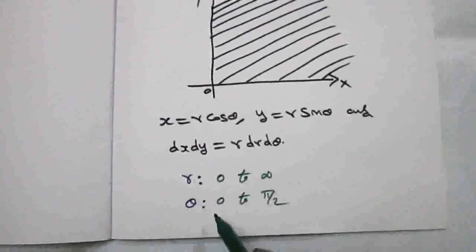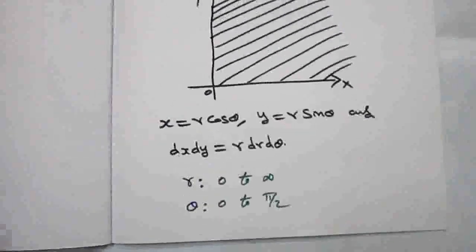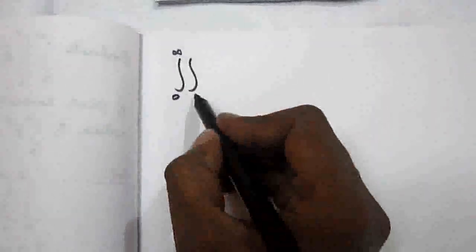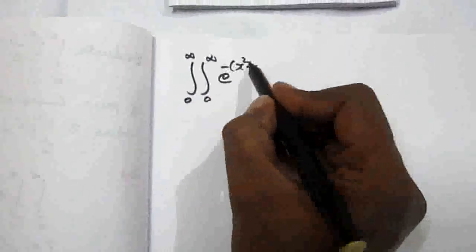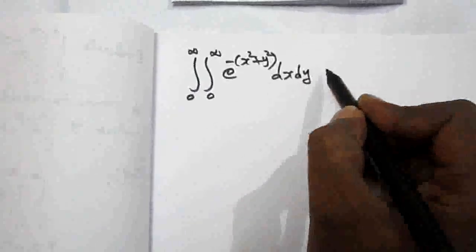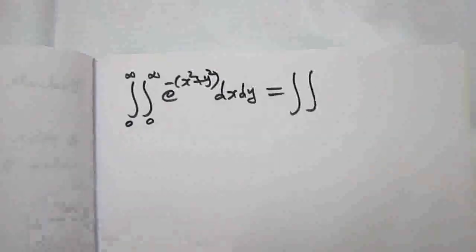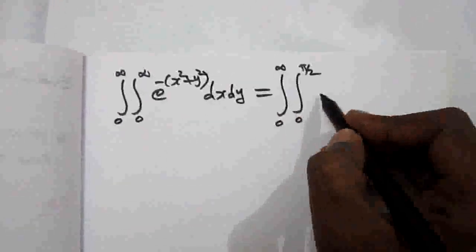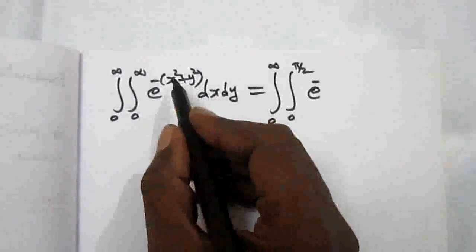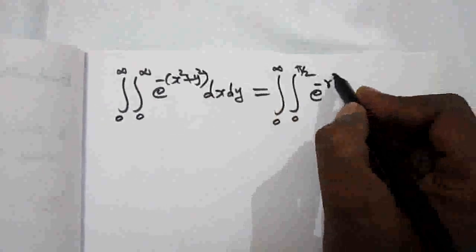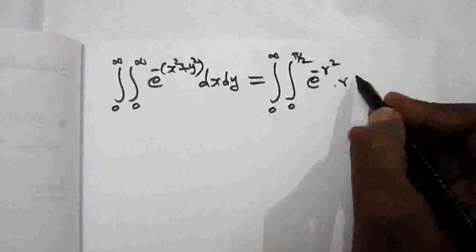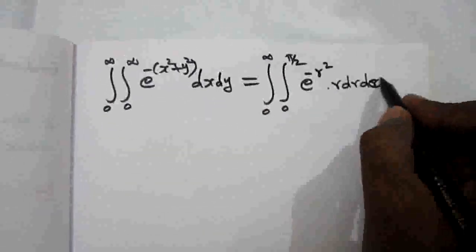So the limit for r is 0 to infinity, and the limit for θ is 0 to π/2 — both are constant limits. Now we integrate the given function by substituting polar coordinates. The double integral becomes: integrate r from 0 to infinity, θ from 0 to π/2, of e to the power minus (x squared plus y squared) times r dr dθ. Since x squared plus y squared equals r squared, and dx dy equals r dr dθ.